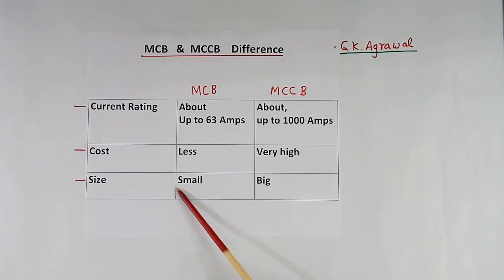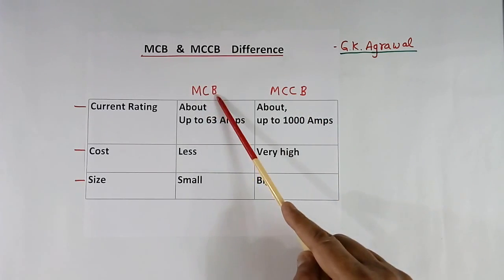MCB size is small. MCCB size is much bigger compared to MCB.